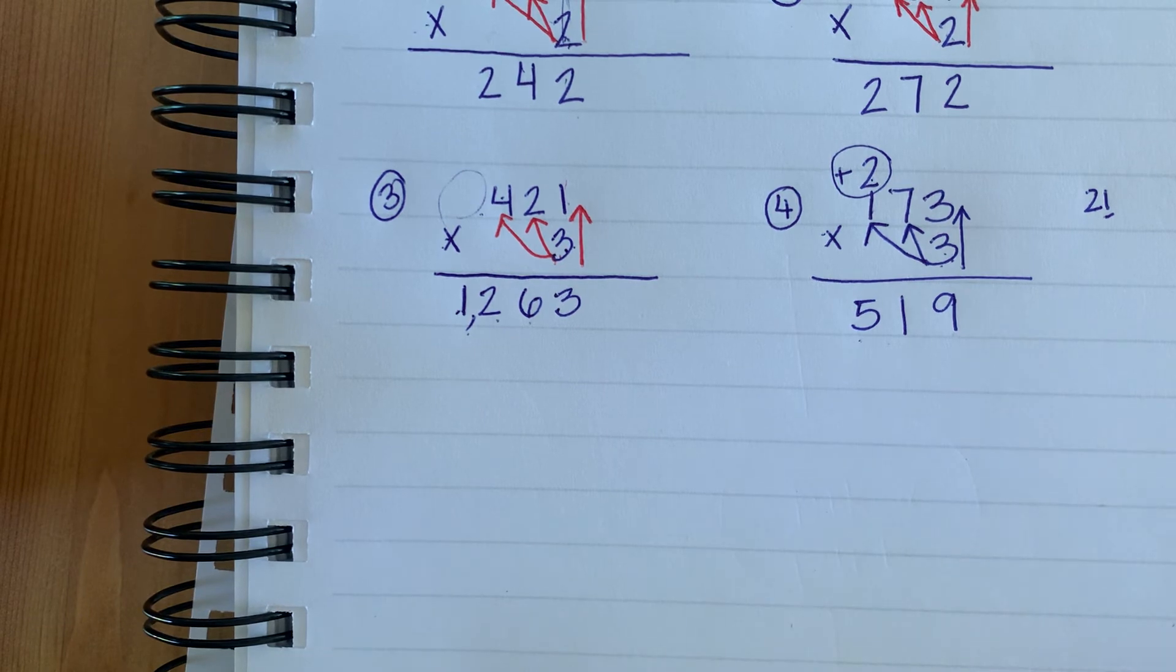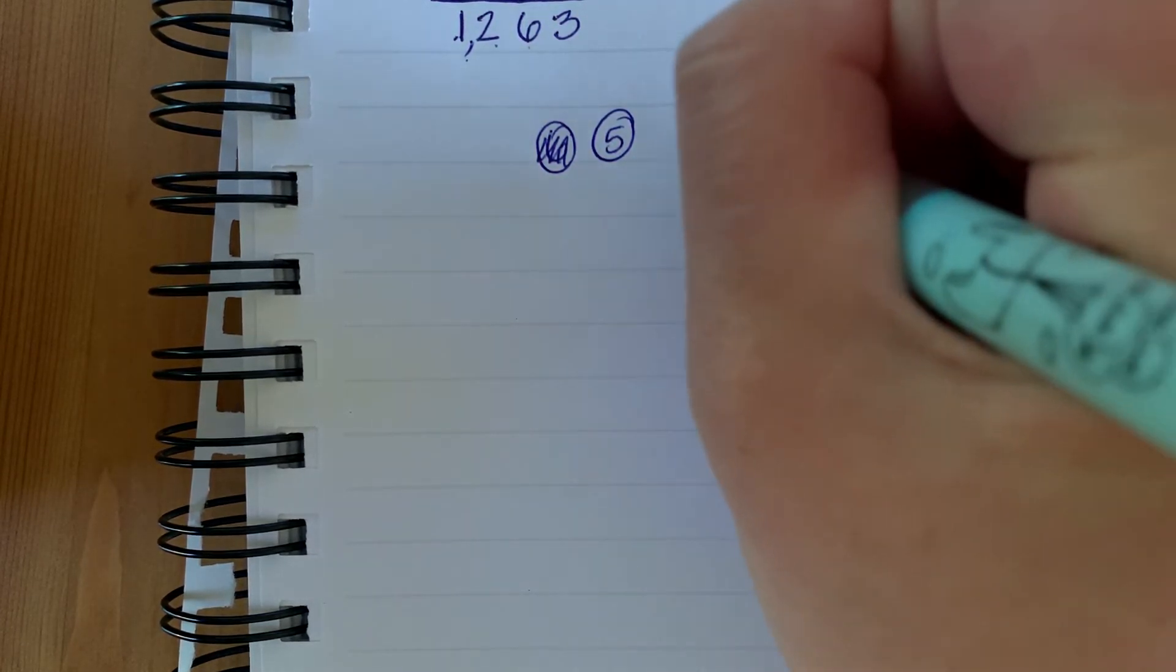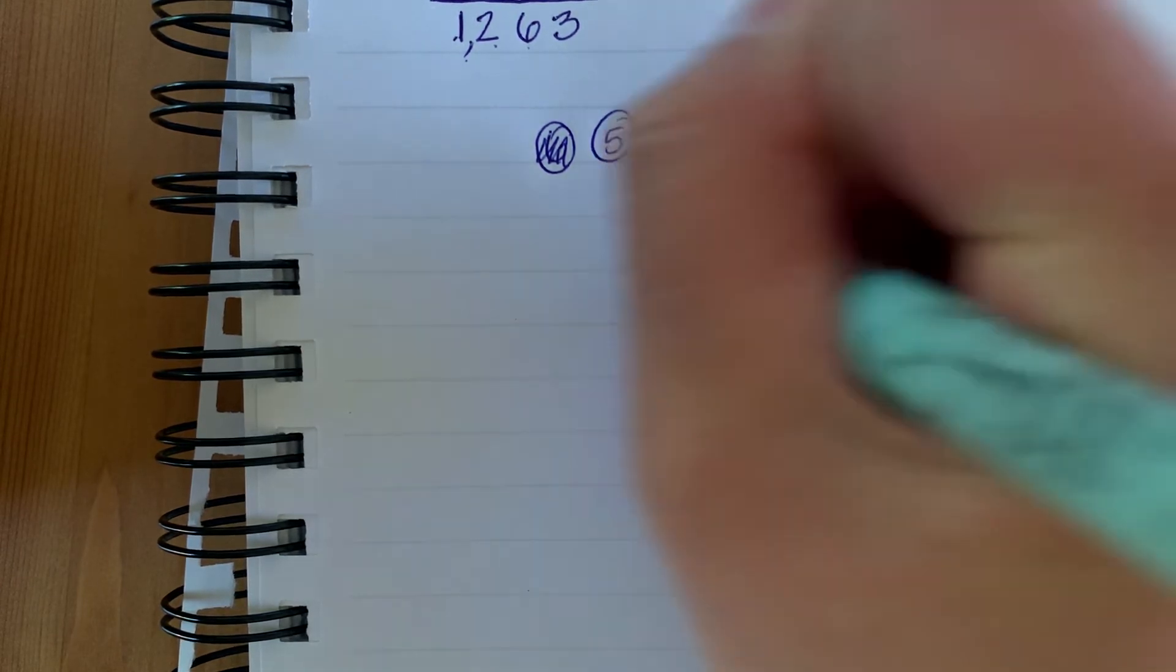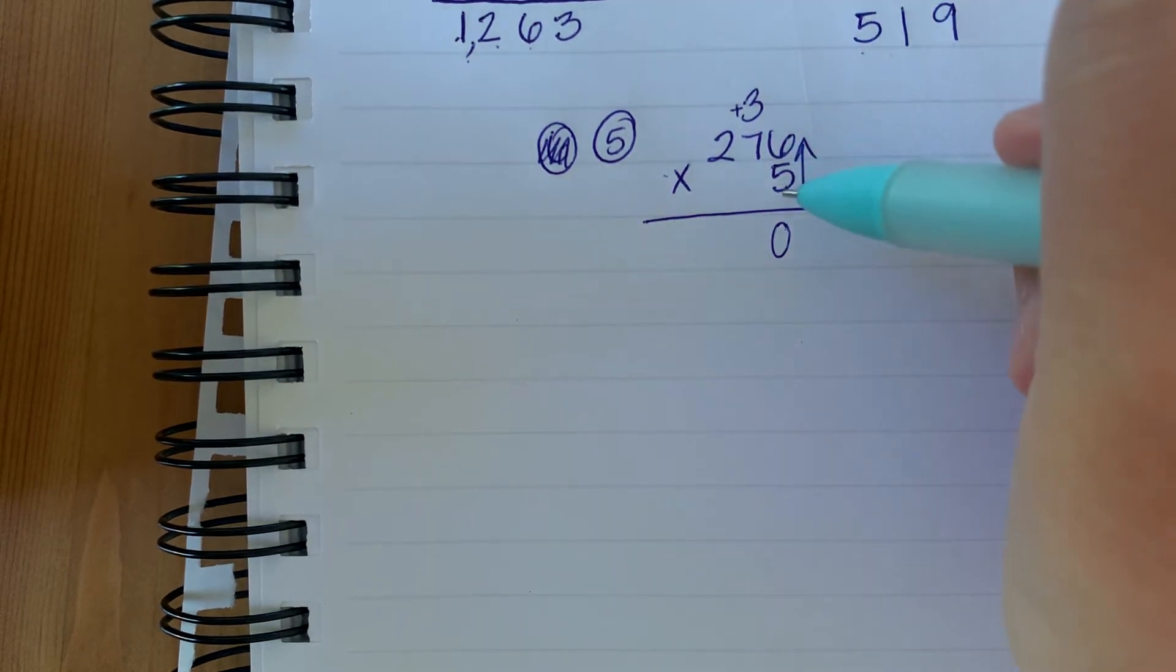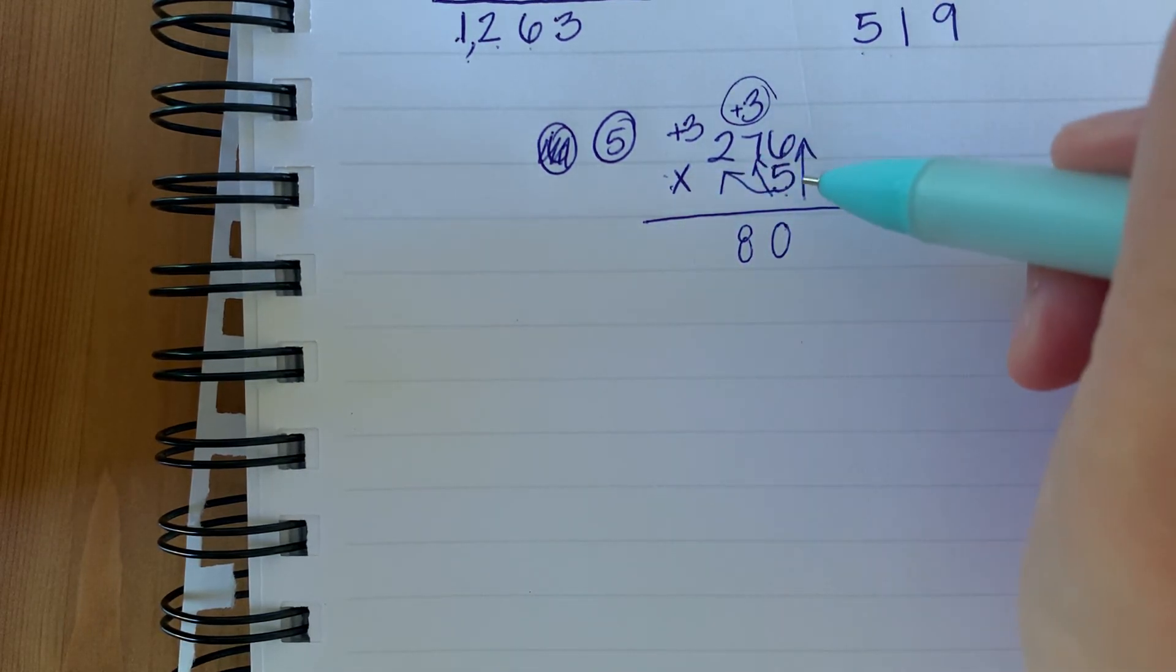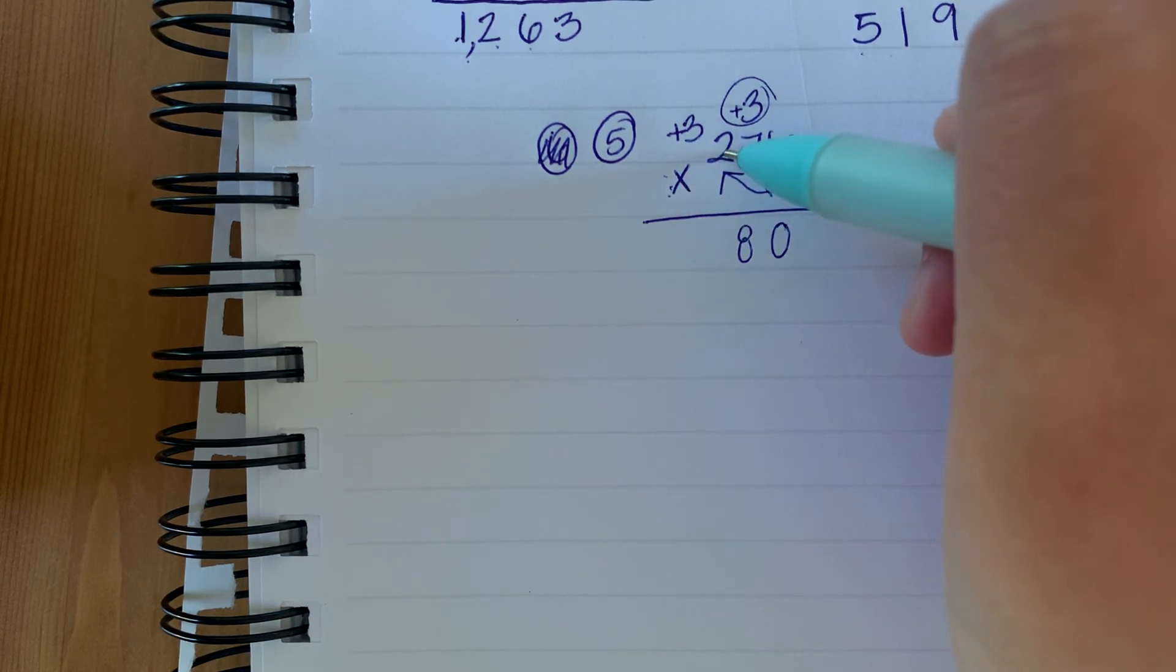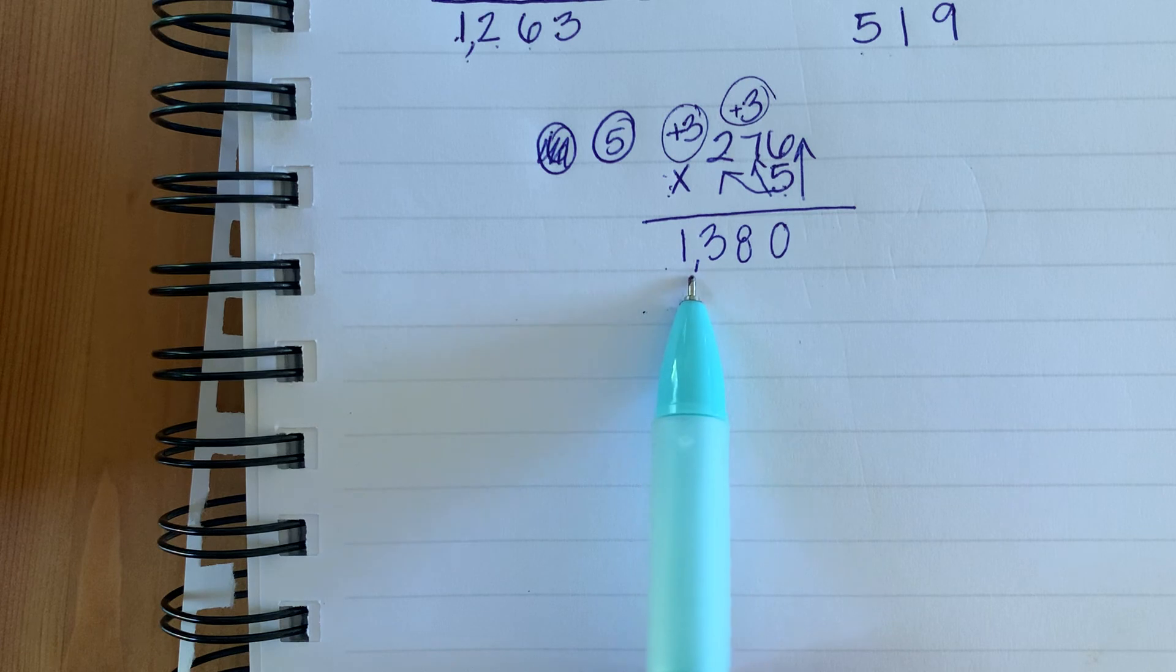And then on the next Google form, you will practice multiplying 3-digit numbers with 1. Let's do 276 times 5. So I'm going to start here. 5 times 6 is 30. 0 comes down here. Regroup the 3 that we're going to add. Then you go across to the 10th place. 5 times 7 is 35. 35 plus 3 is 38. 3 goes up here. 8 comes down below. Multiply the 100th place. 5 times 2 is 10. 10 plus 3 is 13. So my answer is 1380.